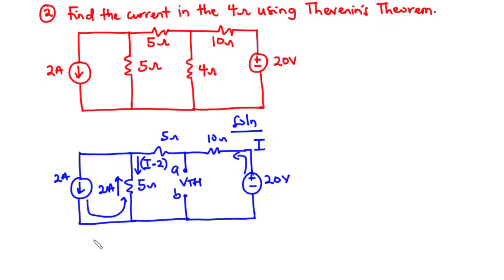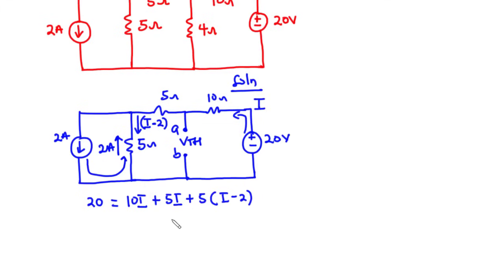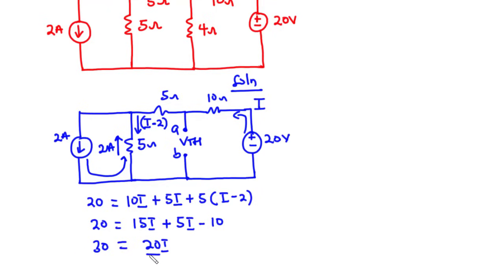Considering this loop, the voltage source of 20 volts equals the sum of voltages dropped across the loop. So we have 20 equals 10I plus 5I plus 5 times (I minus 2), which gives 20 equals 15I plus 5I minus 10. Adding the I terms: 20 equals 20I minus 10. Transposing gives 30 equals 20I, and dividing by 20 gives I equal to 3 over 2, which is 1.5 amperes. This is the current driven by the 20-volt source.